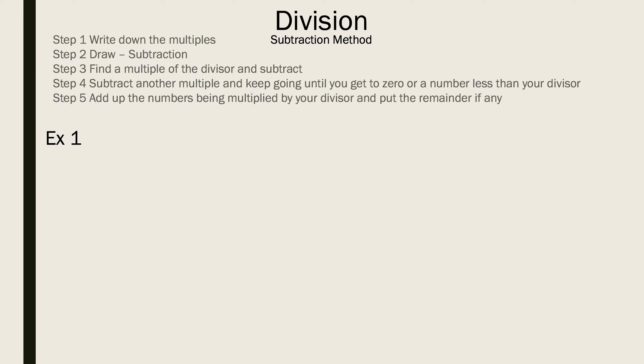If you follow these five steps you will be golden. Step one, write down the multiples. Step two, draw the subtraction line. Step three, find a multiple of the divisor and subtract. Step four, subtract another multiple and keep going until you get to zero or a number less than your divisor. Step five, add up the numbers being multiplied by your divisor and put the remainder if any.